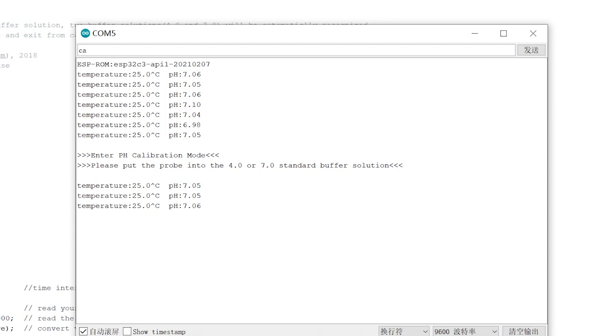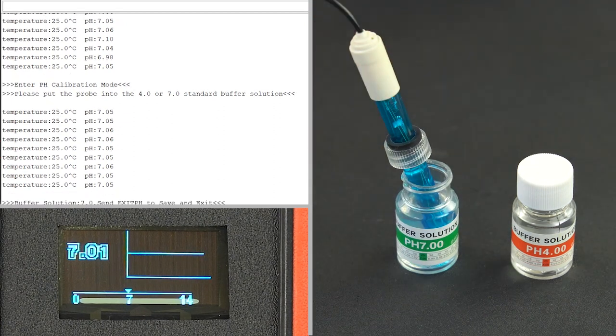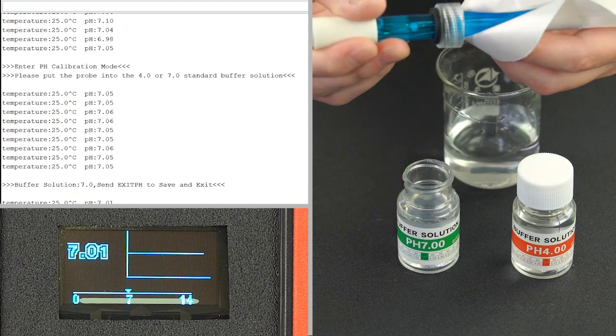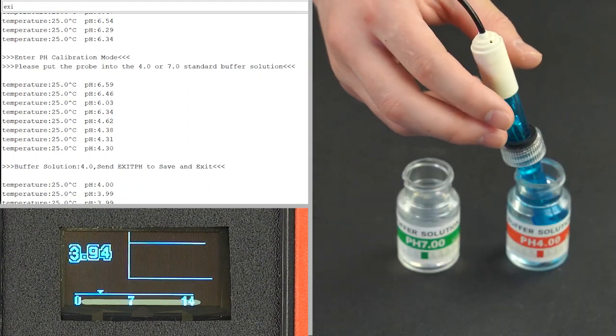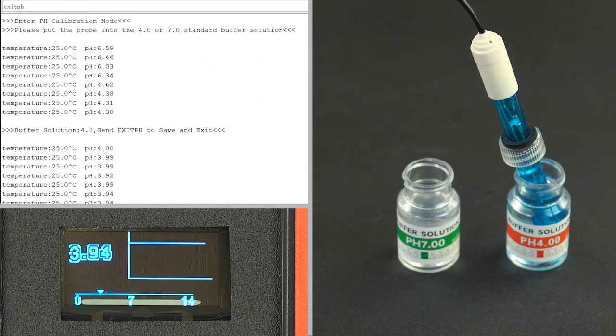DFRobot provides you with the relevant open-source software library, which adopts the two-point calibration method and can automatically identify the two standard buffer solutions, simple and fast.